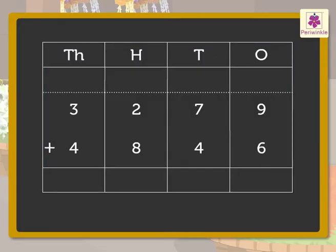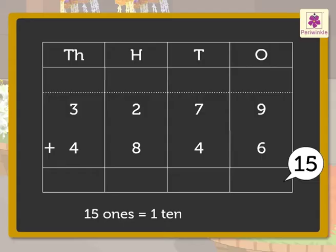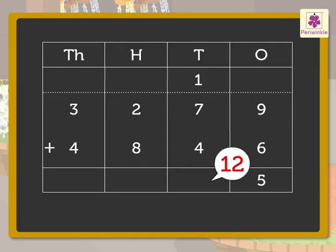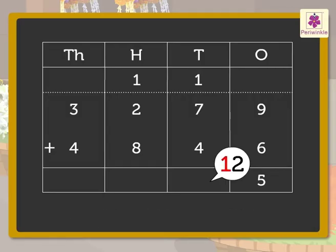First, we add the numbers in the ones column: nine and six. We get the number fifteen. Regroup the fifteen ones — fifteen ones equals one ten and five ones. Carry the one ten to the tens column and write five in the ones column. Now add the numbers in the tens column: one, seven, and four. We get the number twelve. Regroup the twelve tens — twelve tens equals one hundred and two tens. Carry the one hundred to the hundreds column and write two in the tens column.